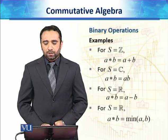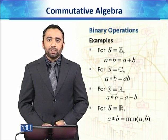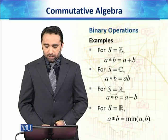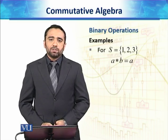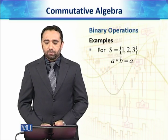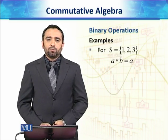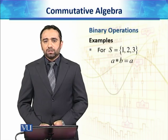If S is equal to the set of real numbers, then a star b can be defined as minimum of a and b.